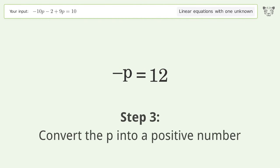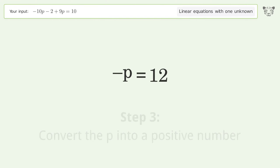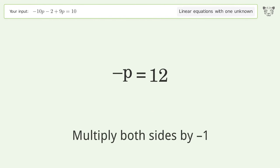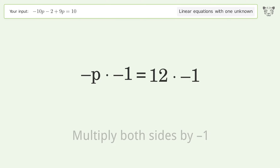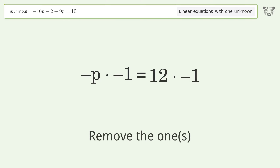Convert p into a positive number. Multiply both sides by negative 1, then remove the 1s.